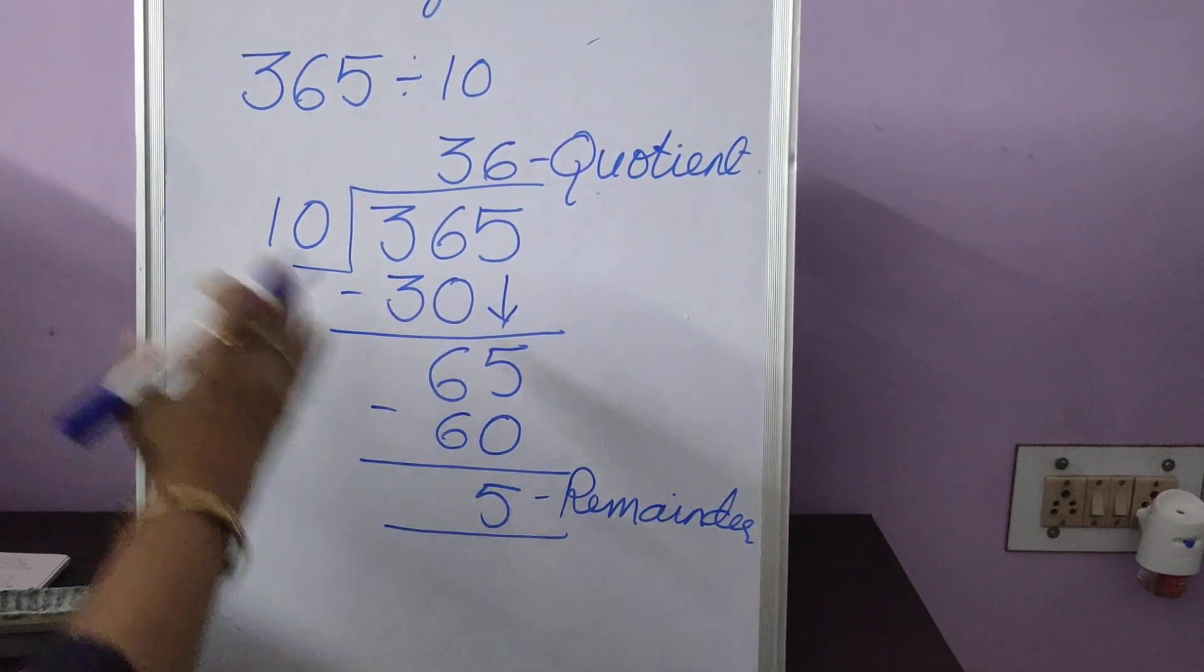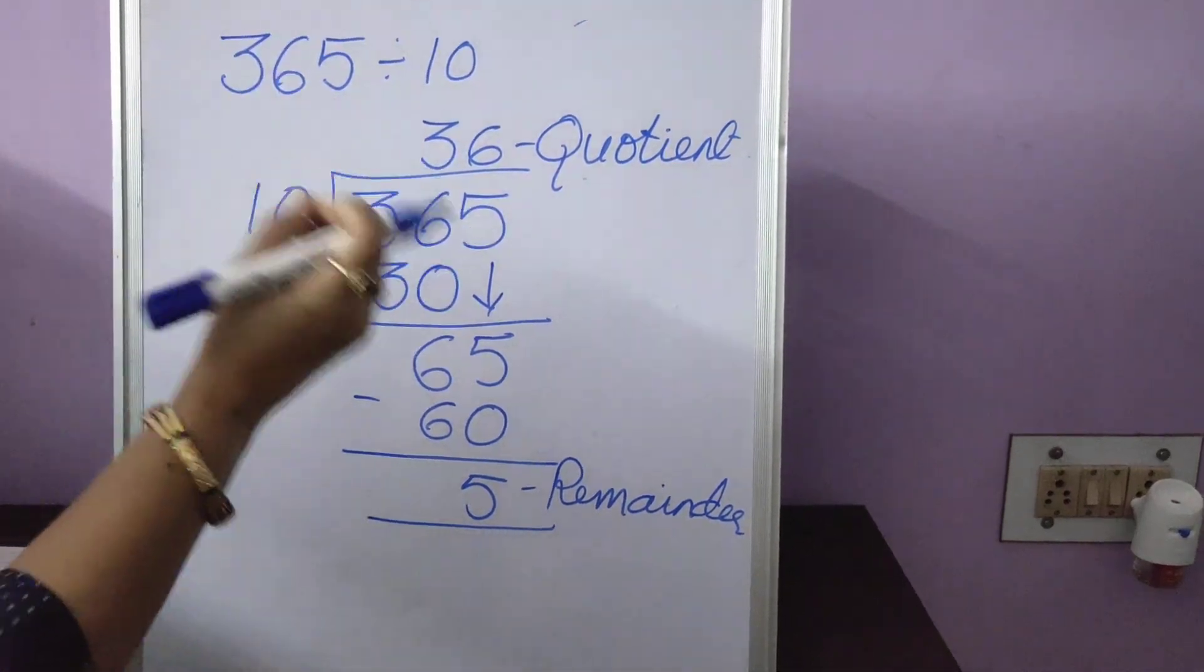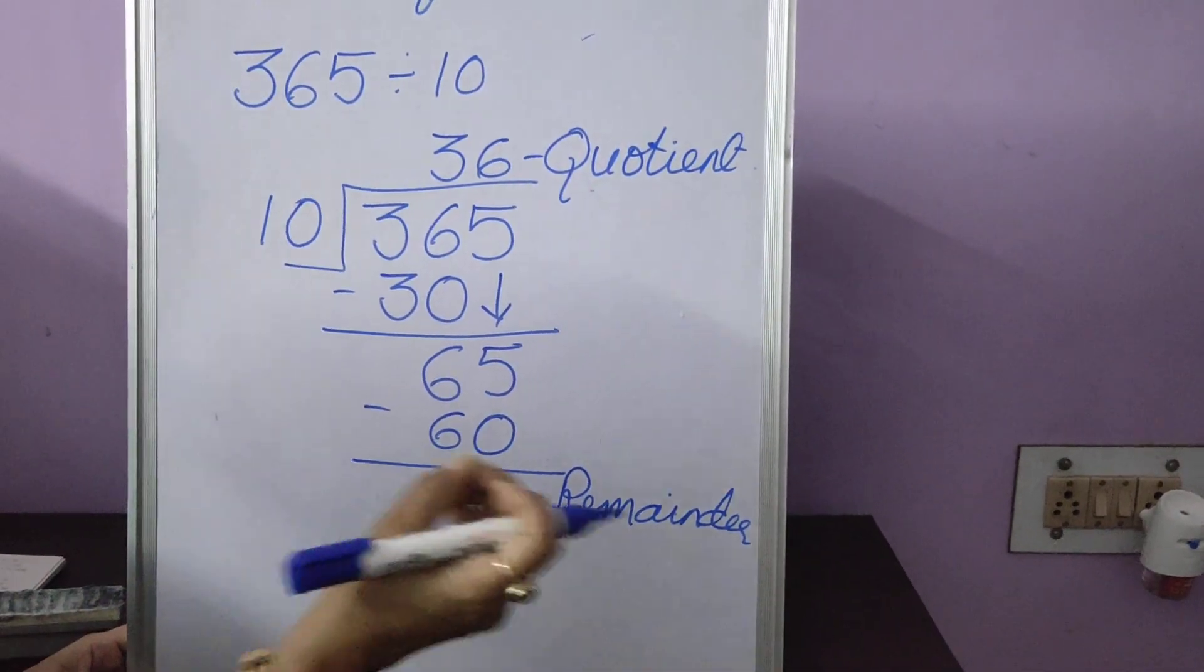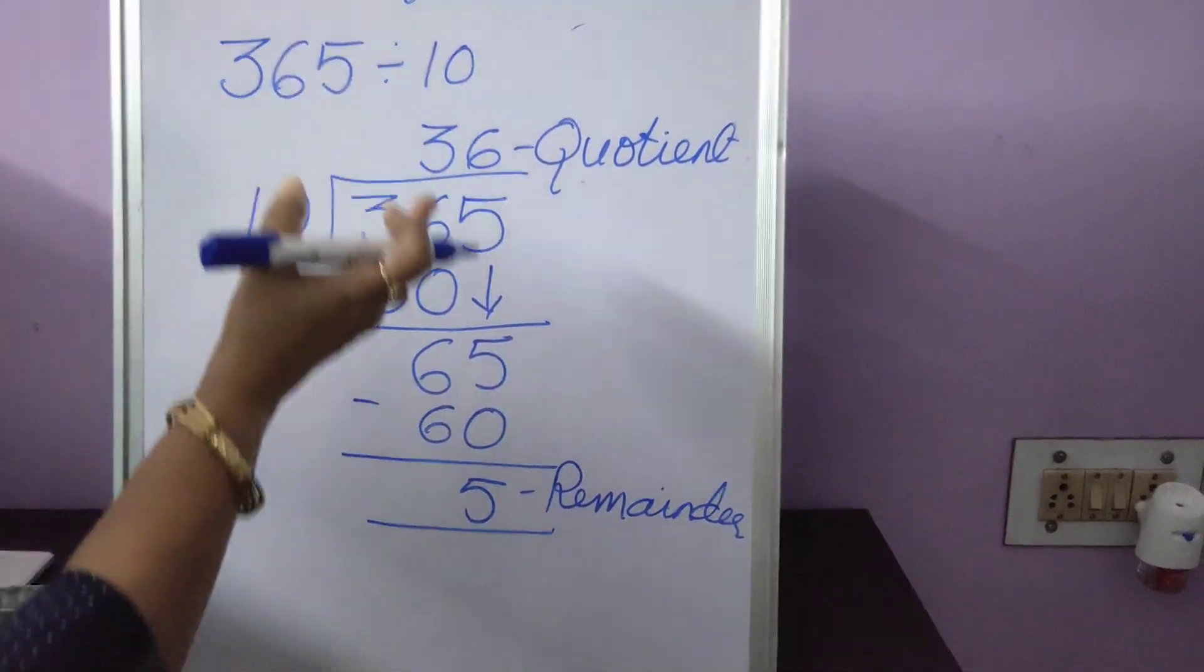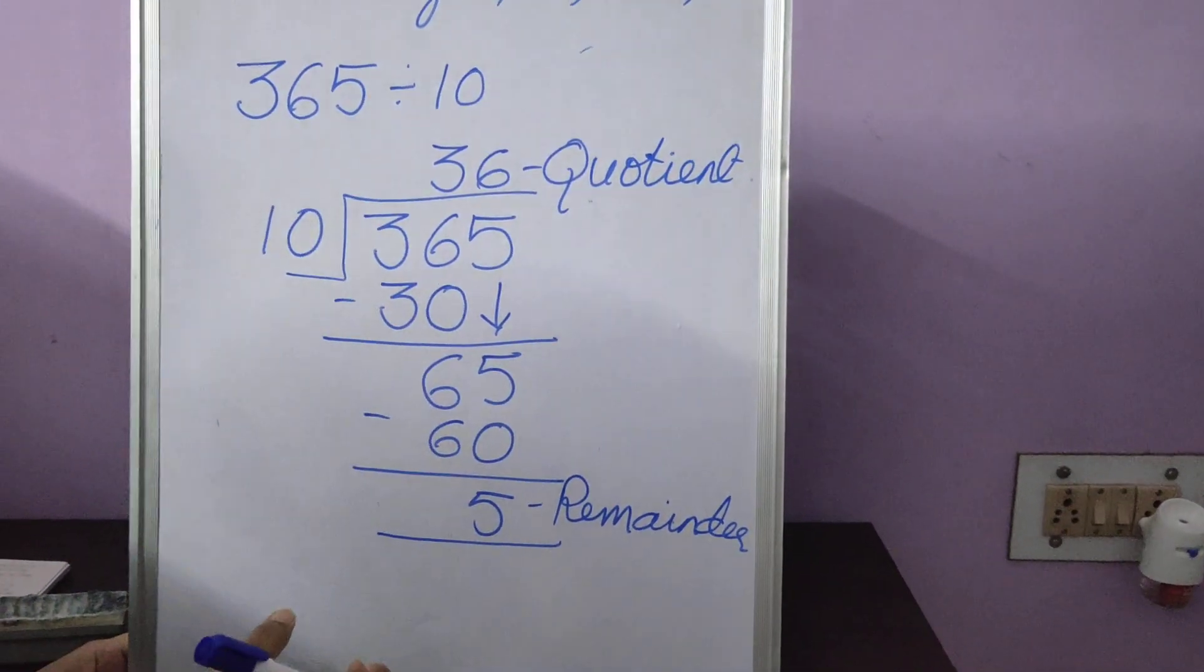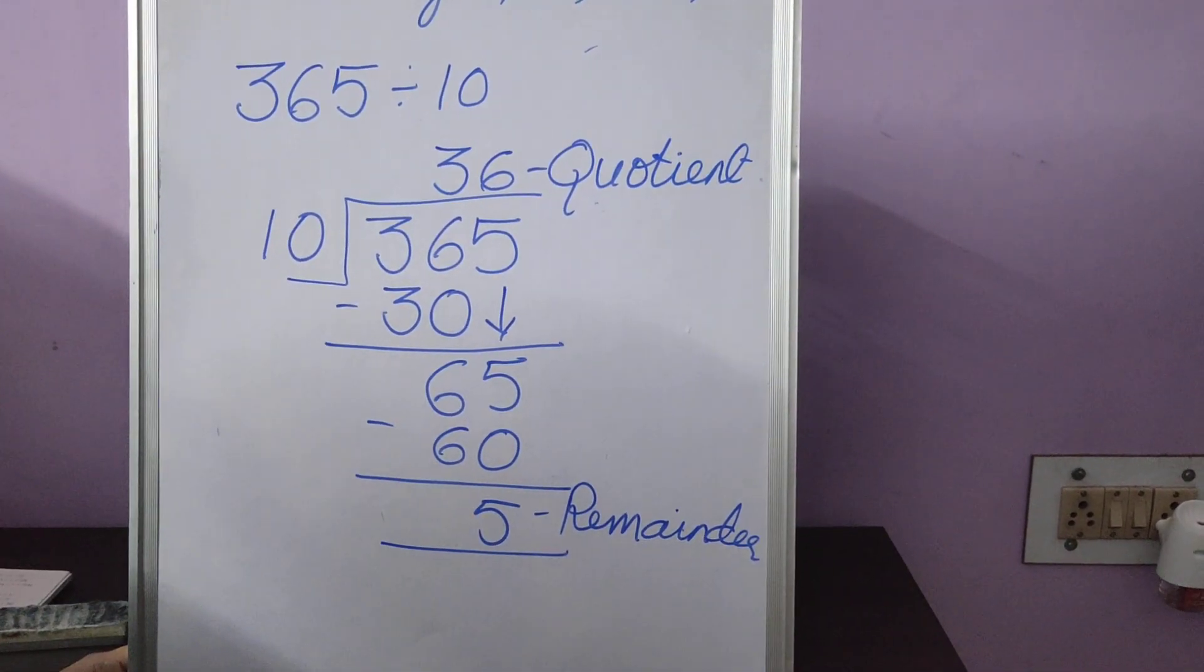But children, if I were to tell you, let us not do this long division method. This same sum that we have done, just remember the quotient is 36 and the remainder is 5. Instead of doing this in this long division method, we can do it in a very short method.